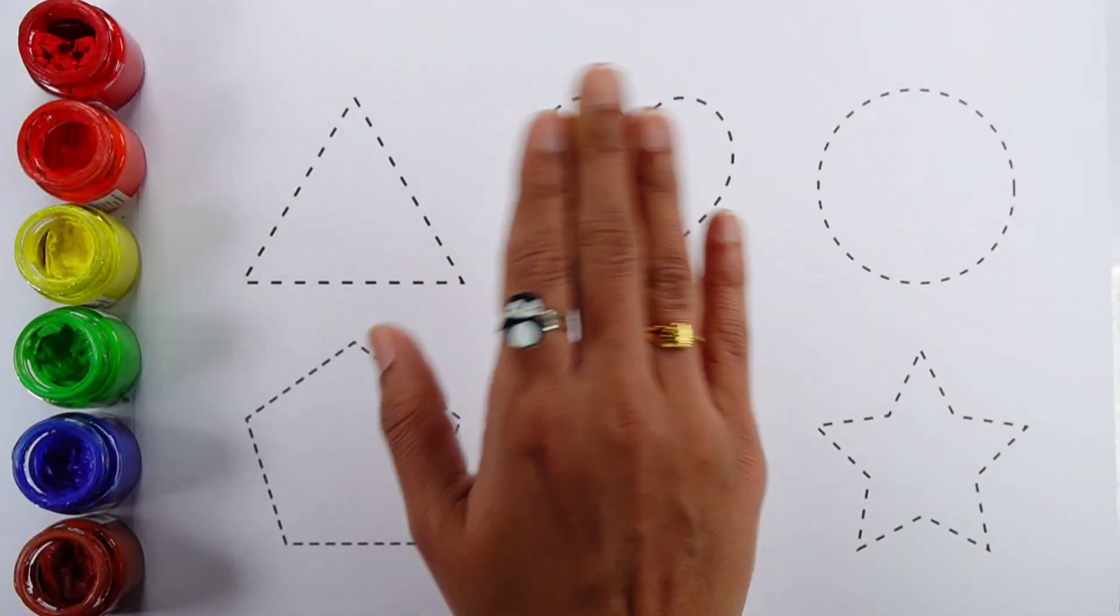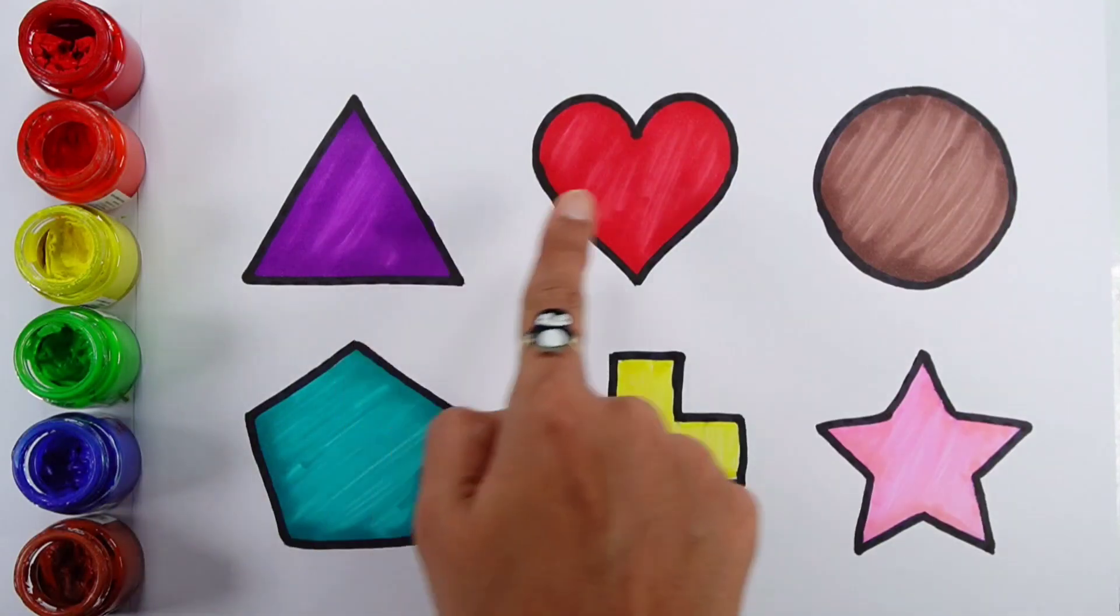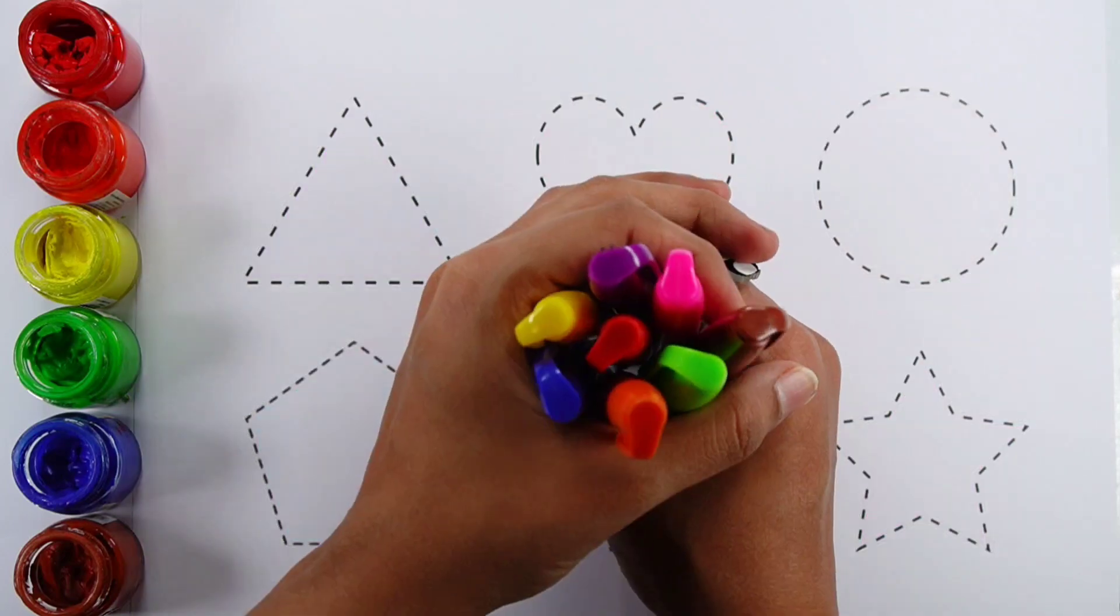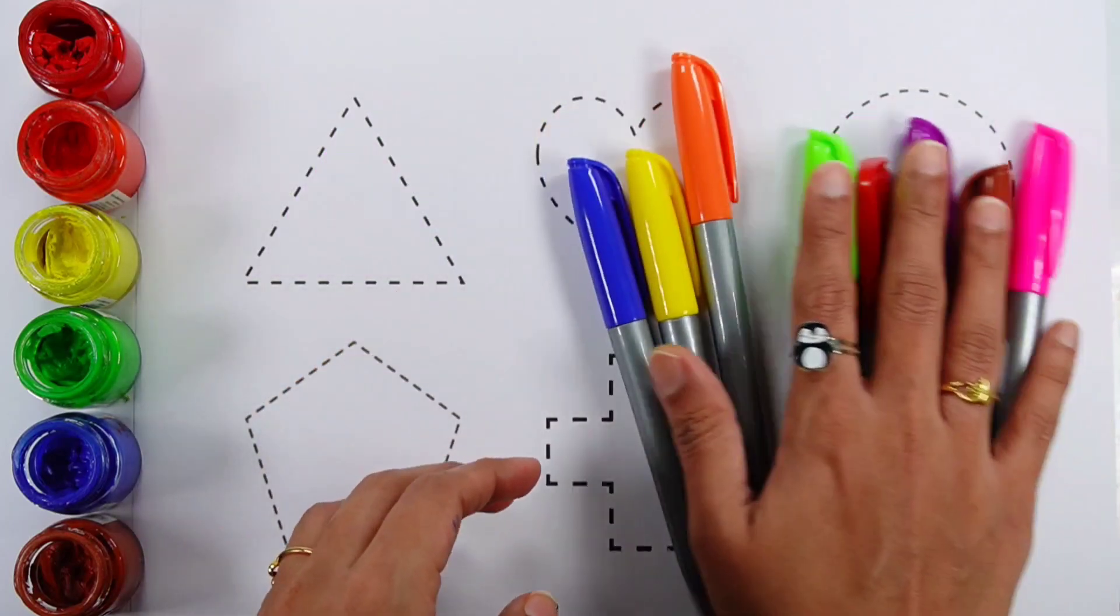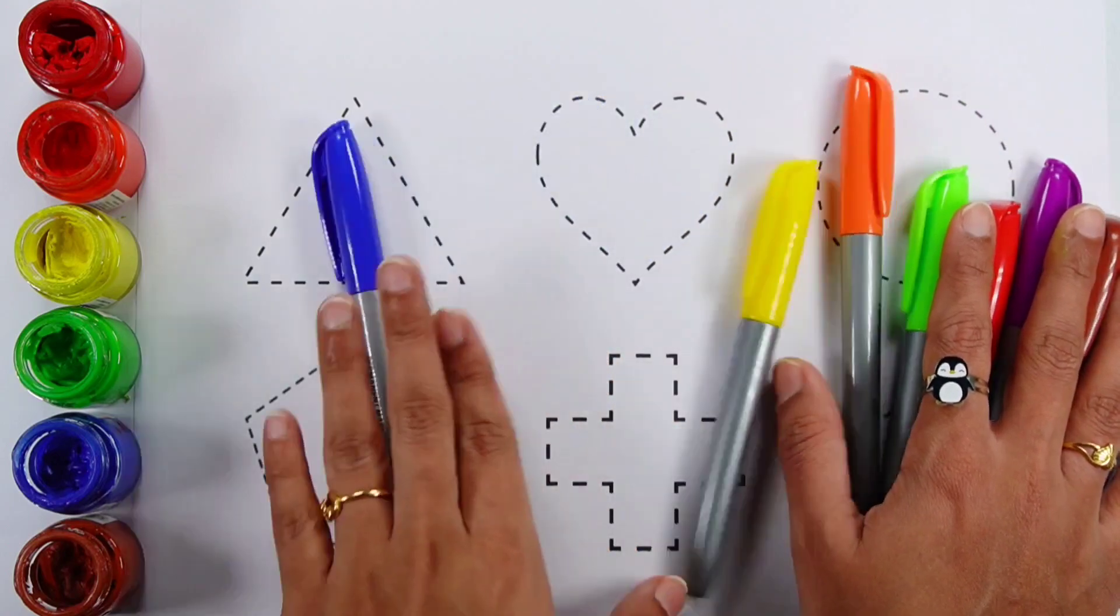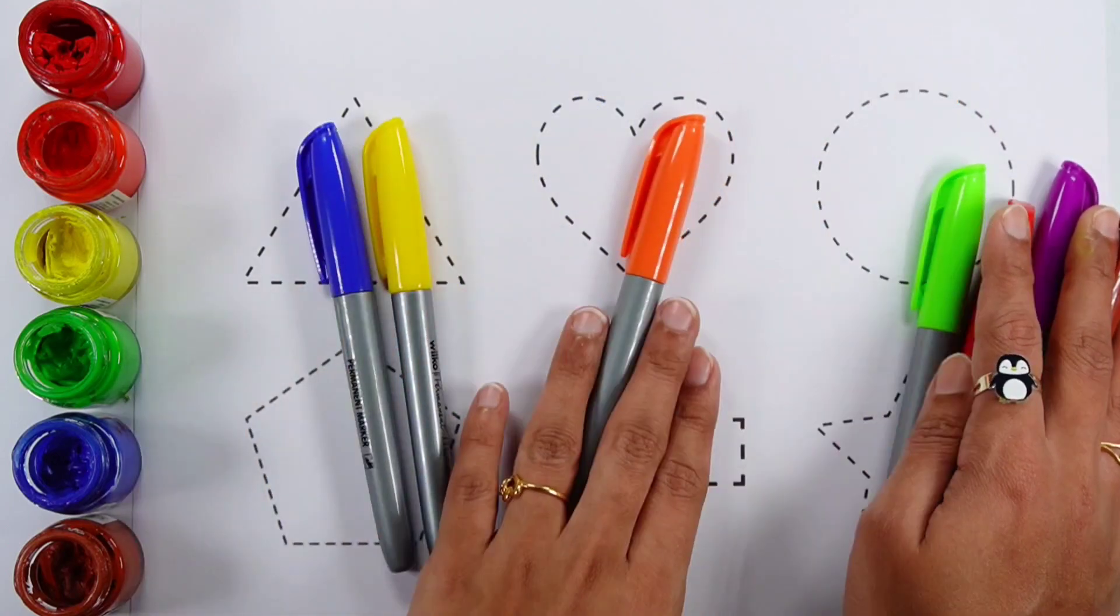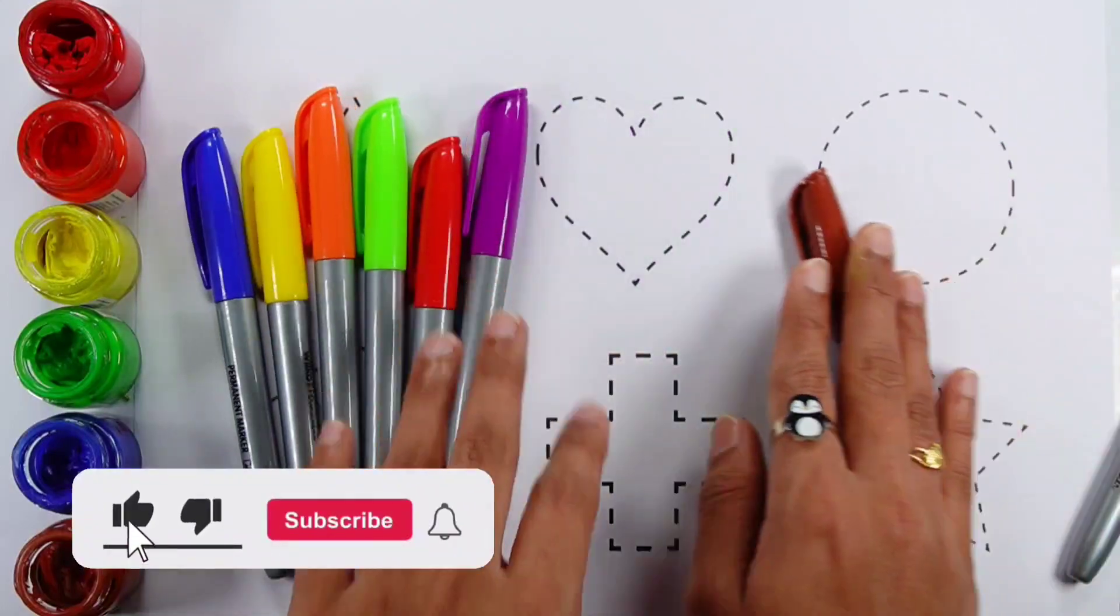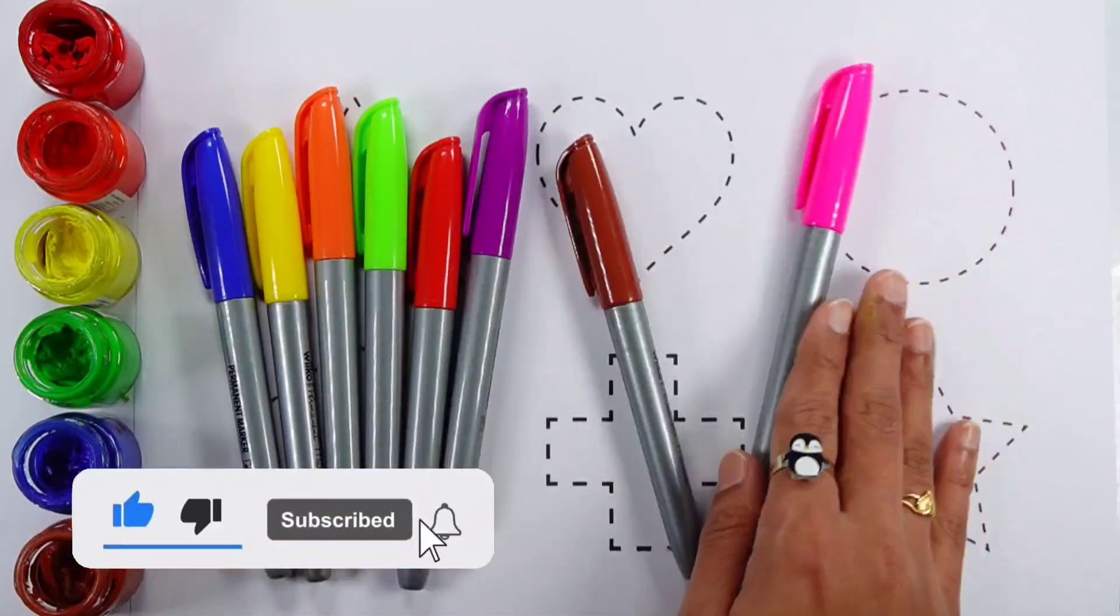Hello! Triangle, heart, circle, pentagon, cross, star. Blue color, yellow color, orange color, green color, red color, violet color, brown color, pink color.